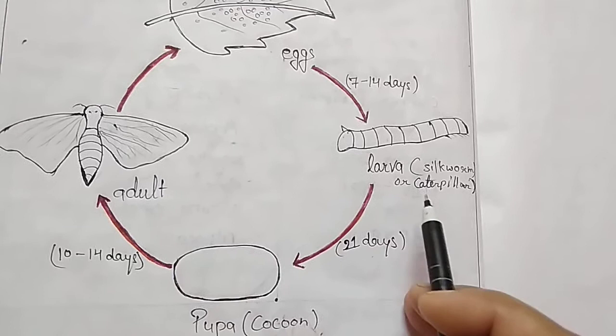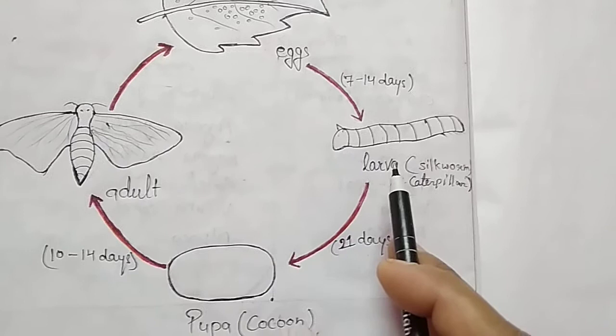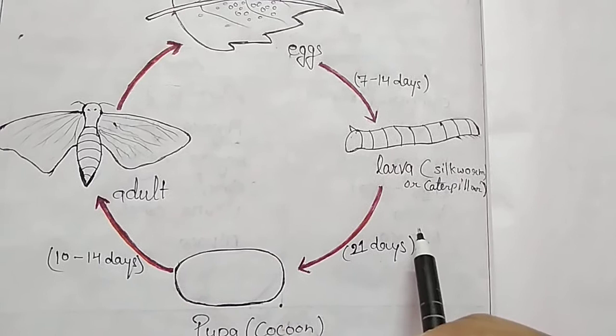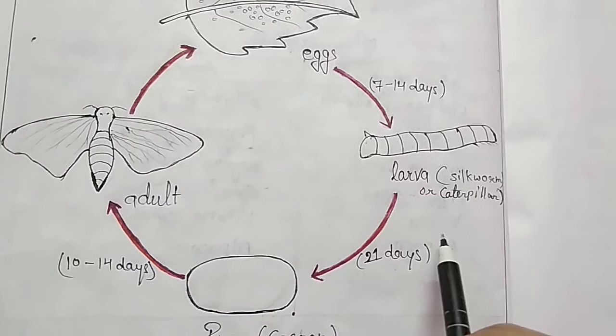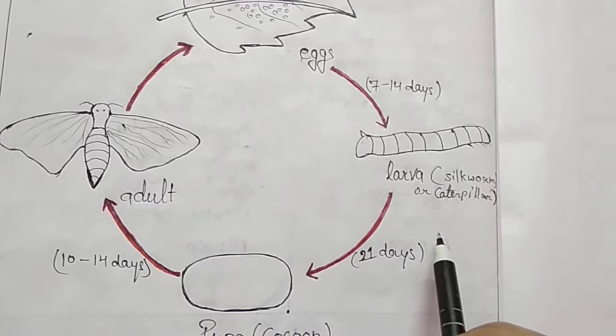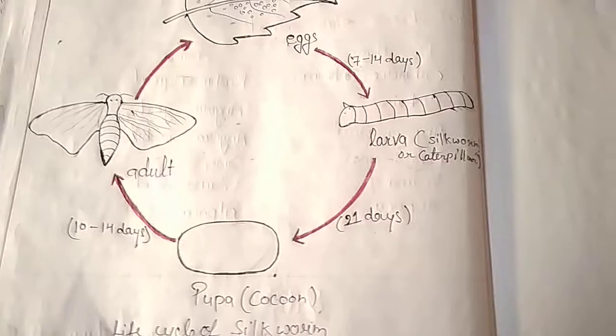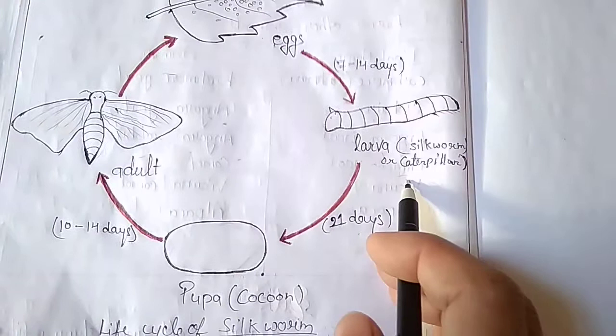The second stage is the larva, also called the caterpillar or silkworm. When an egg hatches, a silkworm crawls out — this is the larva of the silk moth. Initially the larva can feed only on tender mulberry leaves; however, during the growth phase it can eat tougher mulberry leaves as well. The larva stage lasts for about 21 days.